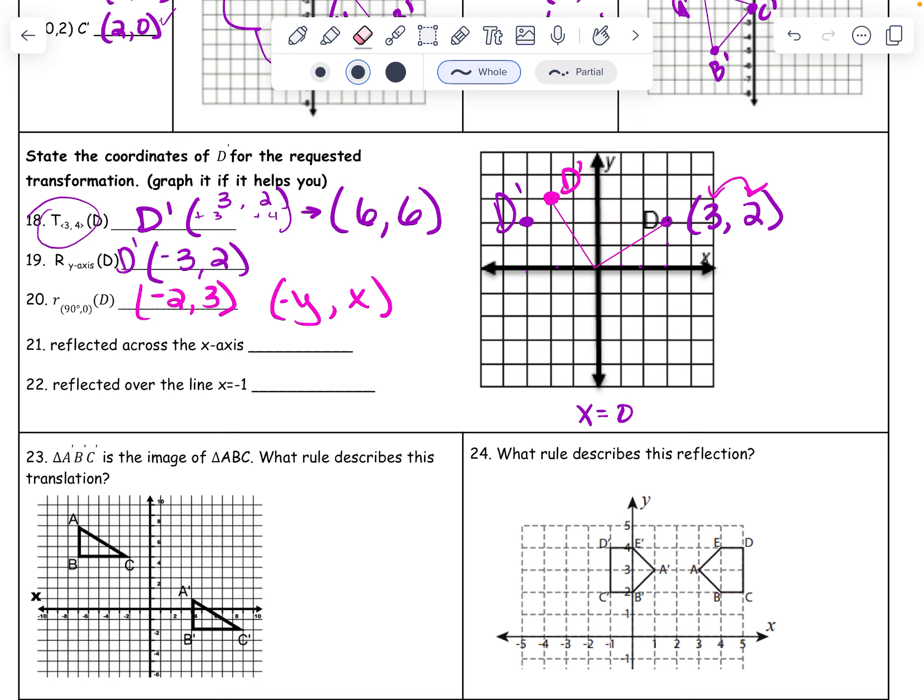All right. Reflected across the x. There's another x. Love that. So the x-axis is this one. That is y equals 0. So we are only changing the y. So it's going to be 3, negative 2. Right here. D prime. Is it 3, negative 2? Yeah. Good. Just checking. Making sure we did everything right.